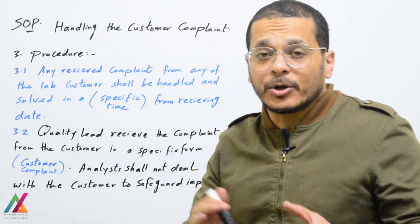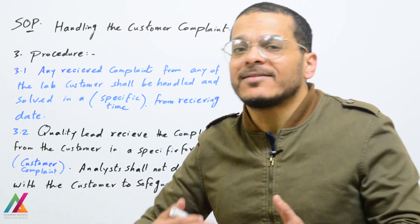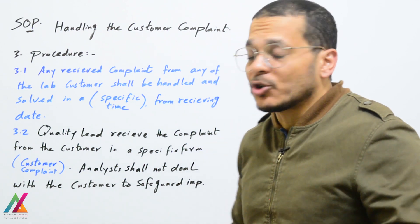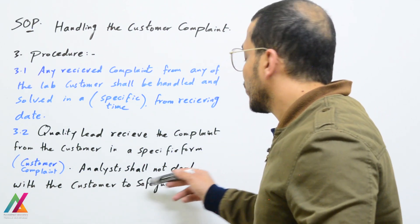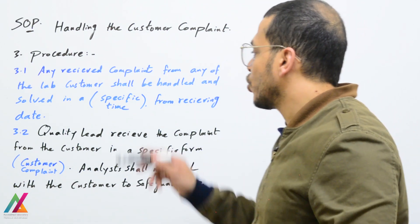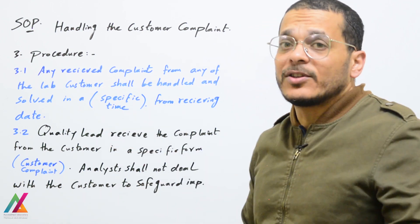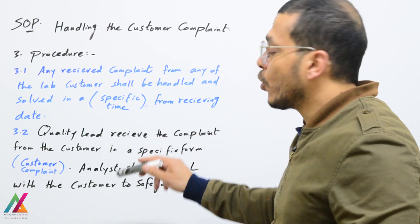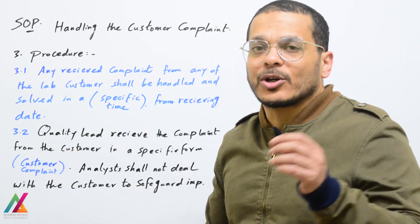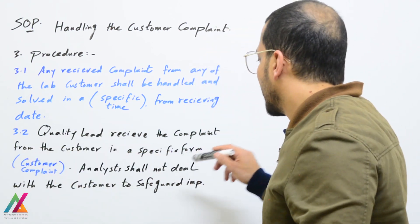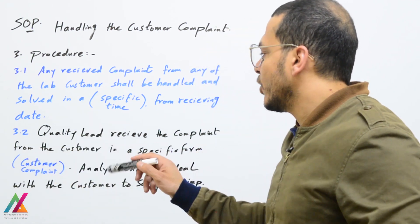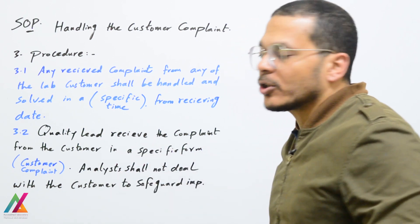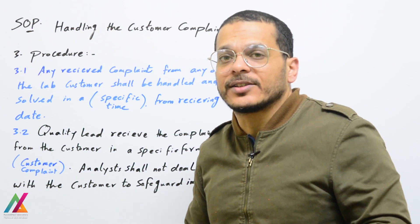Second point: the quality lead of the lab will receive the complaint from the customer. No other personnel from the lab can deal directly with the customer, because that would affect impartiality — you need to safeguard impartiality. Only the quality lead will receive the complaint from the customer using a specific form called the 'Customer Complaint' form. Analysts or other personnel in the lab shall not deal directly with the customer to safeguard impartiality.